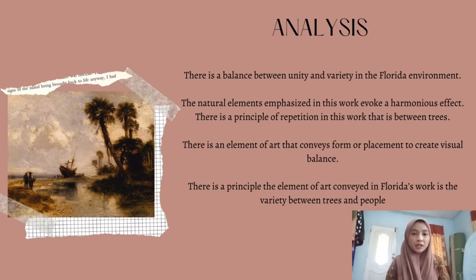Finally, variety is also a principle of art elements found in the artwork, shown by various types of plants. There are palm trees, oak trees, sharp wheat, and flowers in the scene. The people from the ship are unique, each walking their own path and wearing different clothes.